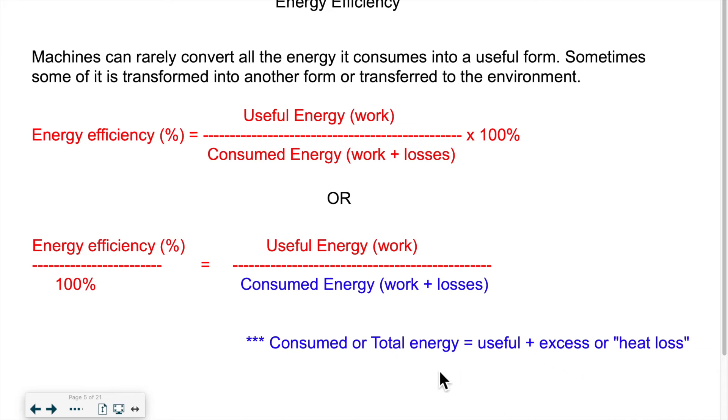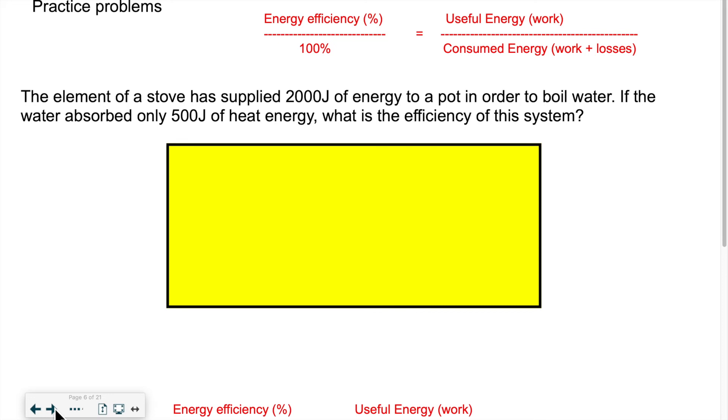We know it's not loss for real. It's just transferred, but we call it that way. So don't forget it's both components together that create the consumed energy. Now, what would a problem look like? I actually have two for you. So here's the first one. The element of a stove has supplied 2,000 joules of energy to a pot in order to boil water. If the water absorbed only 500 joules of heat energy, what is the efficiency of this system?